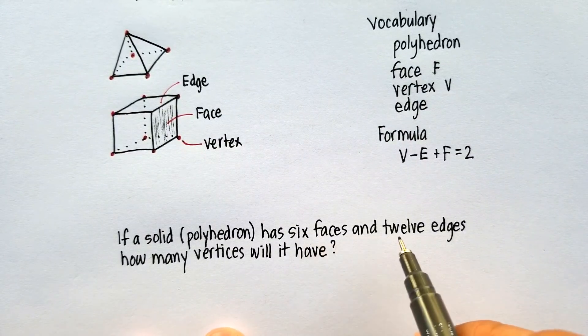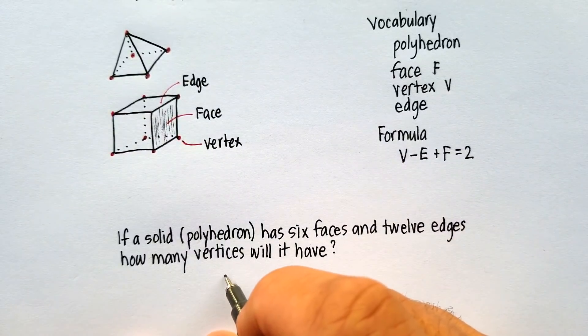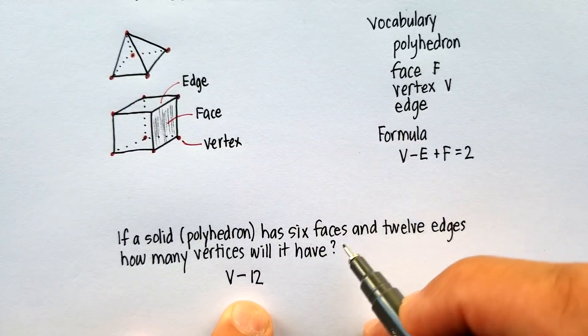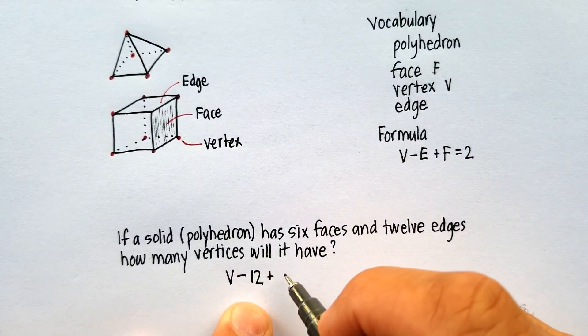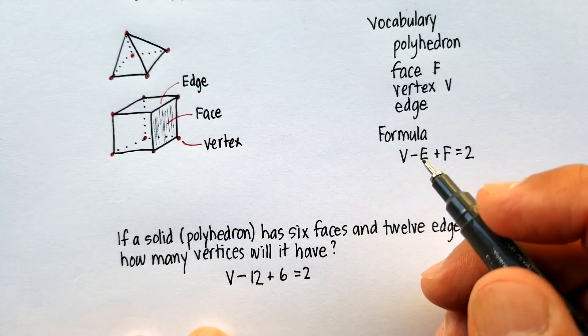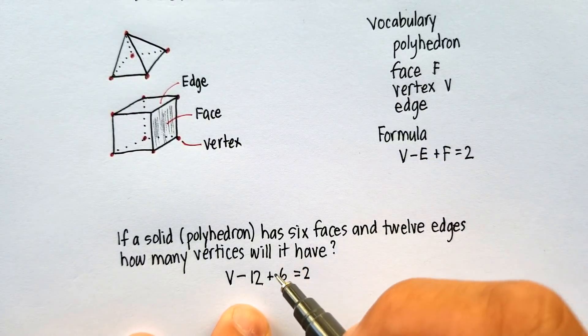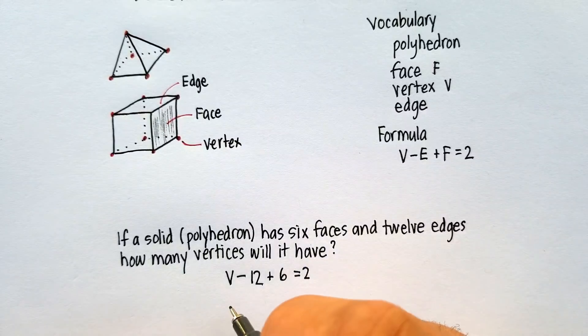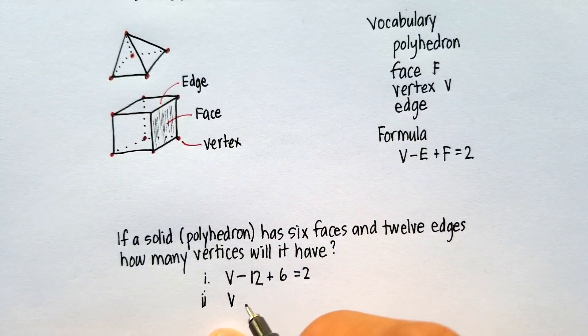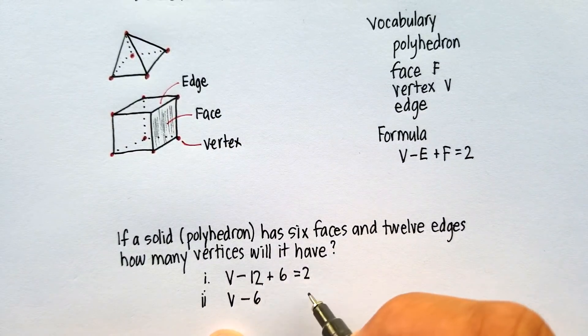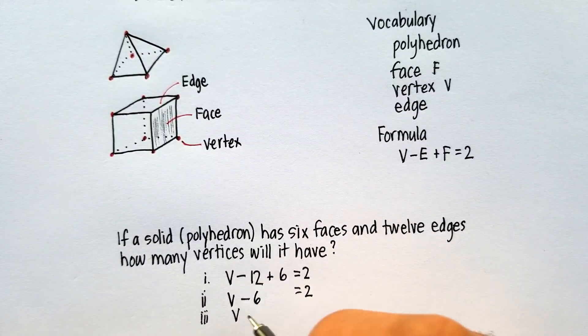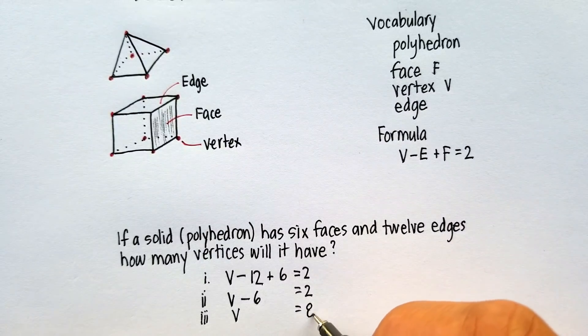So, we know that we have vertices is what we're looking for, right? So, we'll just say V minus edges, we said is 12, and we said there's six faces plus six, and we know that will equal two. Now, remember your algebra. You go ahead and you need to gather like terms. So, that's step one, step two. Negative 12 plus six is actually negative six. That's equal to two. Let's add six to both sides, and you get V is equal to eight.